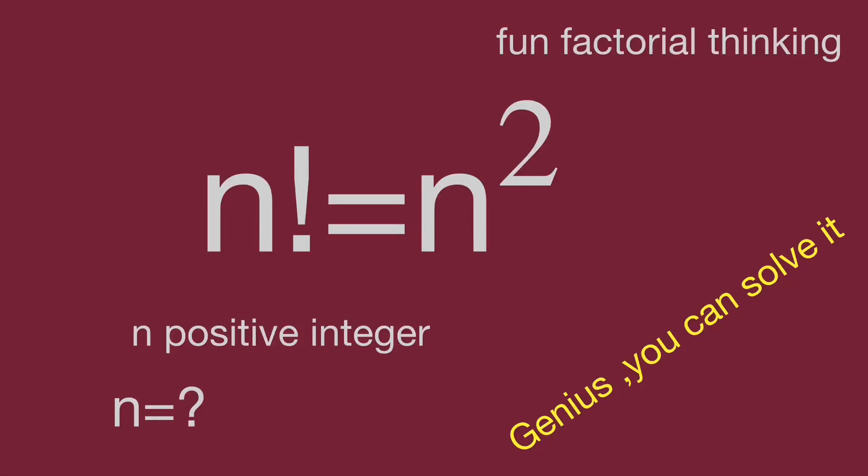Hello, you are watching Bala Hippo Maths Genius Readers. Here's the form of factorial questions: n factorial equal to n squared, where n is a positive integer. Find the value of n.